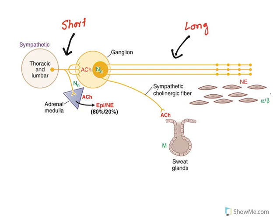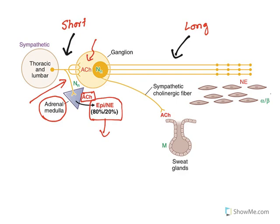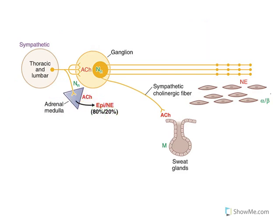There is one important exception in the sympathetic nervous system — a single-neuron system that goes to the adrenal medulla. Stimulation of this neuron results in the release of epinephrine and norepinephrine into the blood circulation. The neurotransmitter here is acetylcholine, acting on nicotinic receptors. About 80% of the release is epinephrine and 20% is norepinephrine. The key difference: epinephrine is a hormone, whereas norepinephrine is a neurotransmitter.